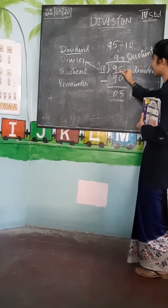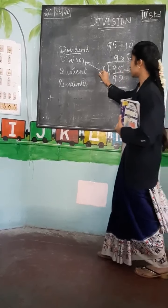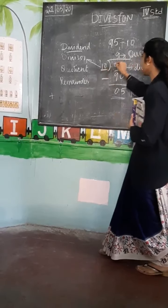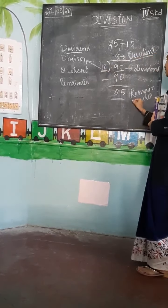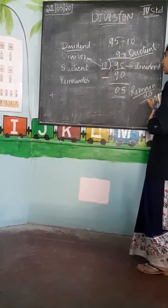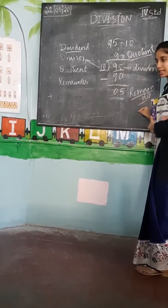This is the dividend, this is the divisor, this is the coefficient, and this is the remainder.